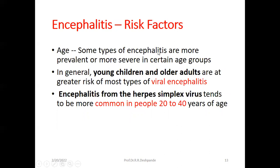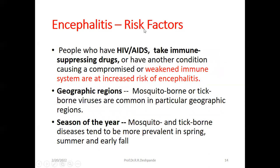Risk factors for encephalitis: Number one is age. Some types of encephalitis are more prevalent or more severe in specific age groups. In general, young children and older adults are at greater risk for most types of viral encephalitis. Encephalitis from herpes simplex virus tends to be more common in the age group 20 to 40.